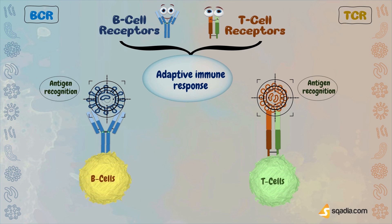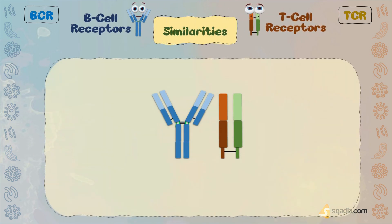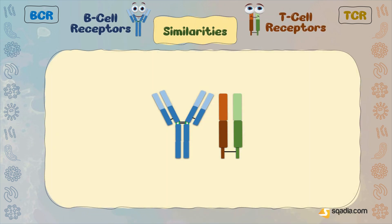An individual T-cell contains around 10,000 to 30,000 identical copies of a single TCR. Similarly, there are around 10 lakh BCRs over the membrane of each B-cell. Although I'll show a single TCR and BCR over the cell surface, just imagine that there are plenty of them attached over the surface of T lymphocytes.